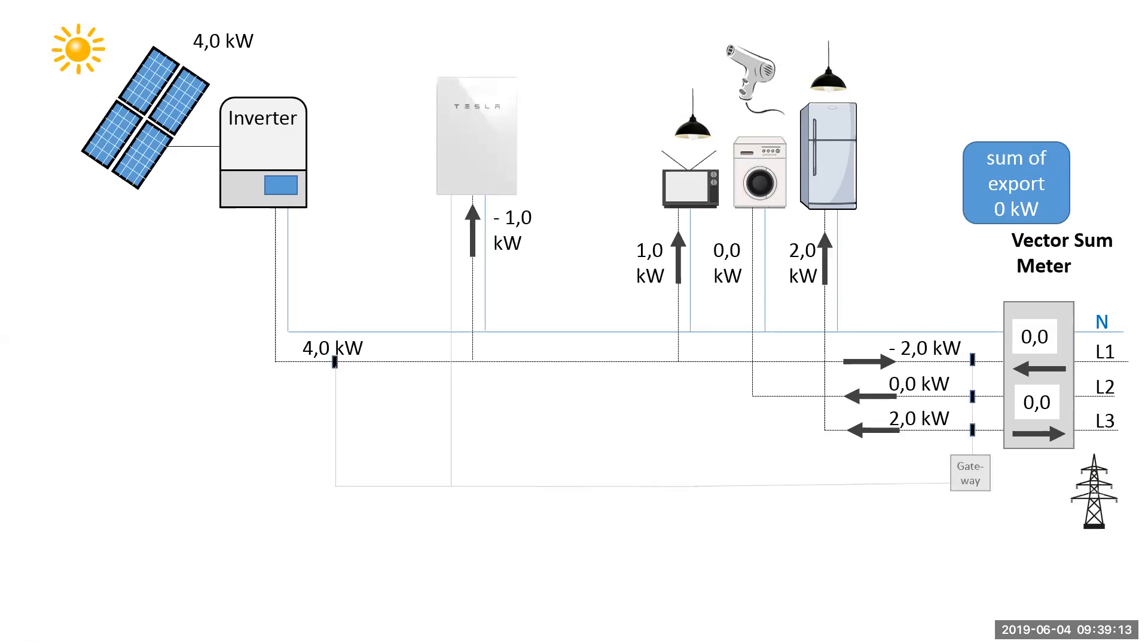That battery will see that there is one kilowatt going out to the grid and it will pull it in into the battery, therefore keeping the vector sum meter at zero. It would still be exporting two kilowatts out on L1 and you'd be pulling the same two kilowatts in on L3, leaving the vector sum meter to be zero.